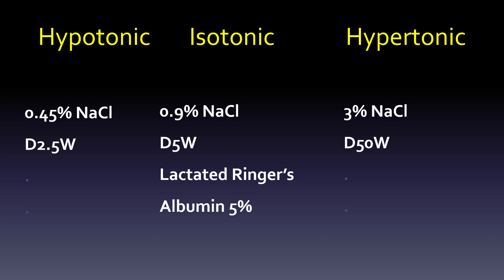Here's a summary of the fluids. On the left, hypotonic: 0.45% sodium chloride and D2.5W. In the middle, isotonic: 0.9% NaCl, D5W, lactated Ringer's (also called Ringer's lactate — they're synonyms), and albumin 5% as a colloid. On the right, hypertonic: 3% NaCl and D50W.